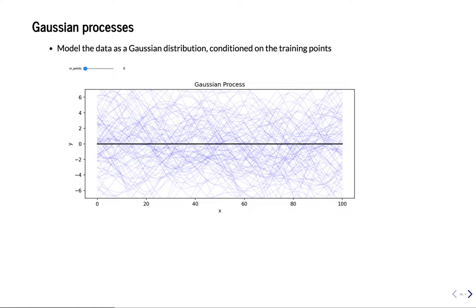Hi, I'm Joachim van Schroegen and welcome back to our machine learning course. We've been looking at Bayesian learning and now we've arrived at Gaussian processes which are, objectively speaking, one of the coolest algorithms in existence. Also one of the hardest to understand, so I'll do my best to explain to you what happens exactly.